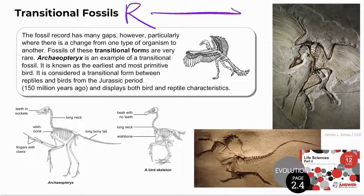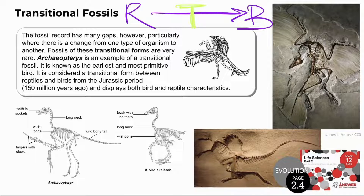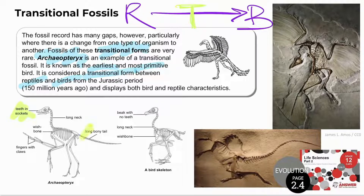Archaeopteryx is a well-known transitional form — the earliest and most primitive bird, considered a transitional form between reptiles and birds from the Jurassic period. It shows both reptile and bird characteristics. As a reptile, it has teeth in sockets, a long bony tail, and claws on its fingers. Its bird-like characteristics include a wishbone and feathers.